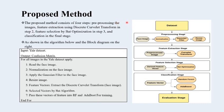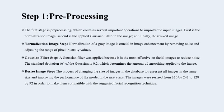In this block diagram, the dataset is input to pre-processing, where normalization, Gaussian filter, and resize are applied. Then feature extraction is performed by curvelet transform, followed by feature selection by BAT optimization. Finally, classification is performed by random forest and AdaBoost. Step one: pre-processing. The first stage is pre-processing, which contains several important operations to improve the image: normalization, Gaussian filter, and resize.